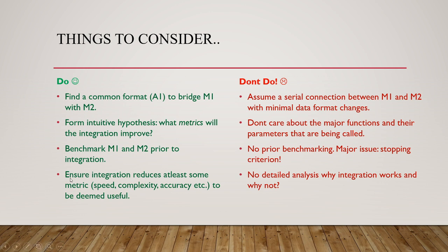Finally, ensure the integration reduces at least some metrics — improving speed, complexity, and accuracy all at once is very hard, but you need improvement in at least one. Don't shy away from detailed analysis of why the integration works under some settings and not others. Maybe accuracy improves on a certain subset of data but not all — you need to analyze both cases. Building the joint pipeline is important, but post-analysis is essential for the work to count toward industrial research.